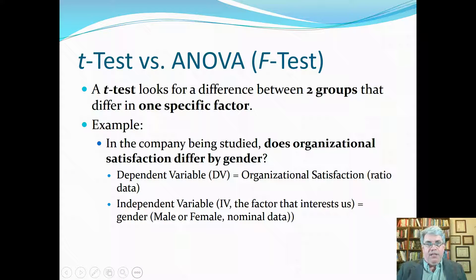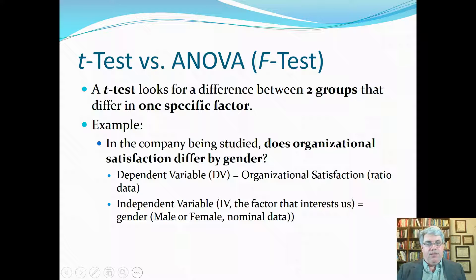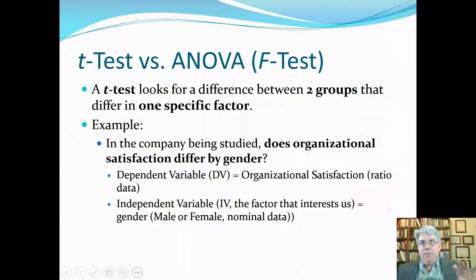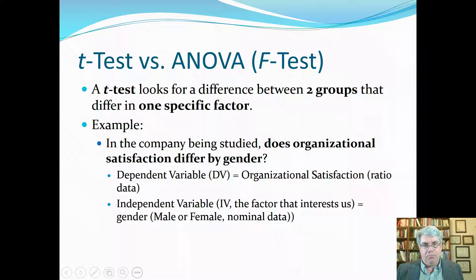Let's start off by comparing a t-test to an ANOVA. A t-test looks for a difference between two groups that differ in one specific factor. For example, does organizational satisfaction differ by gender? We've got two groups — males and females — and we want to find out if organizational satisfaction is different between the two groups.